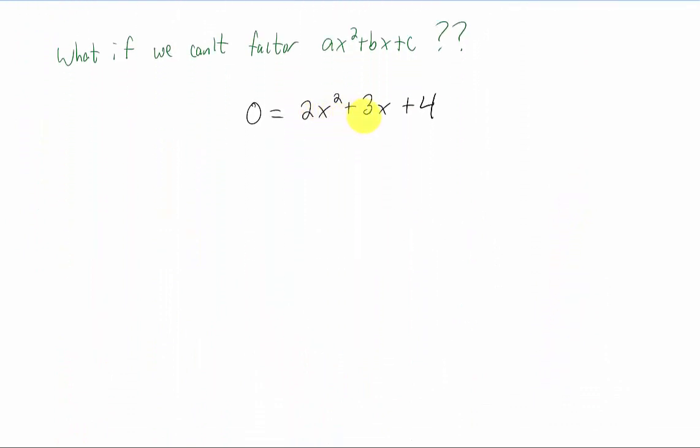For example, 2x squared plus 3x plus four equals zero. If we wanna solve that for x, factoring just isn't going to work. So we have this thing called the quadratic formula that allows us to solve equations of the form zero equals ax squared plus bx plus c. The solution is given to us in this somewhat complicated looking formula.